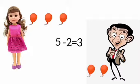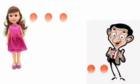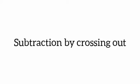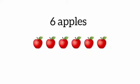Subtraction by crossing out. How many apples are there? Yes, six apples. I take away two apples, four apples. Cross out two apples. How many apples left? One, two, three, four. Yes, four apples. Six minus two is equal to four.